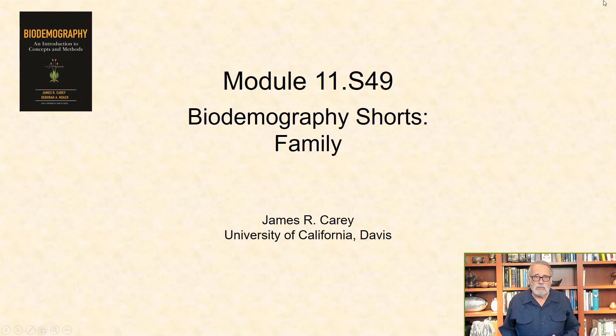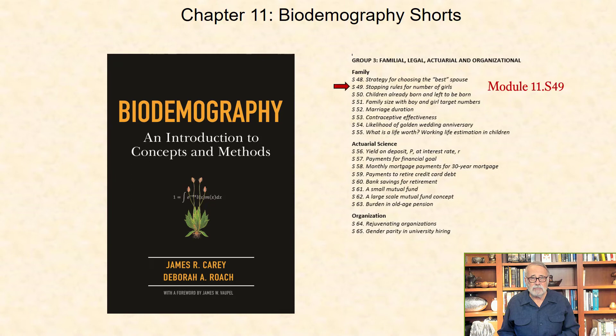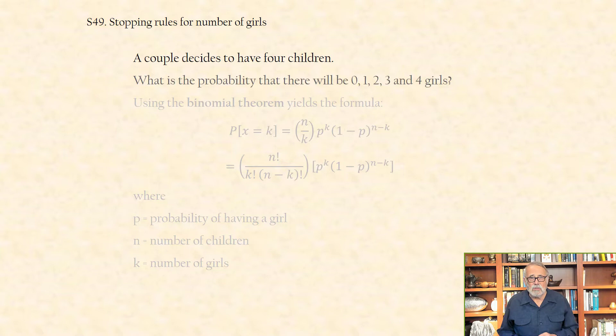In this biodemographic short, I consider stopping rules for number of girls. A couple decides to have four children. What is the probability that they will have 0, 1, 2, 3, or 4 girls?